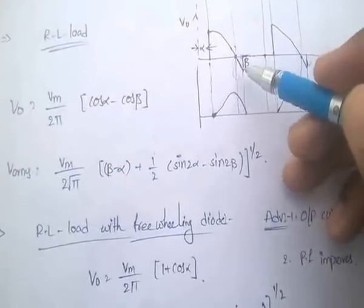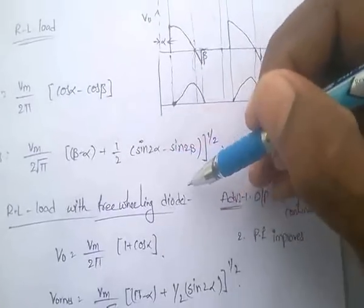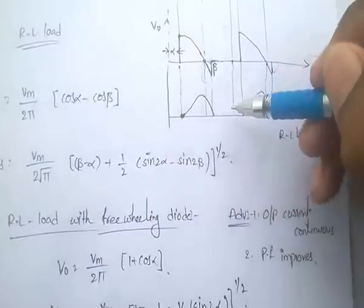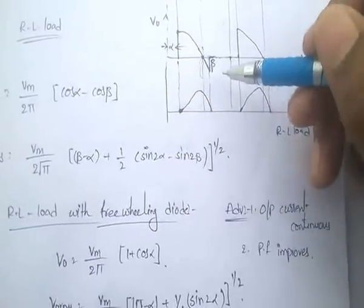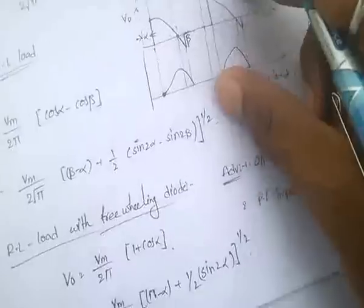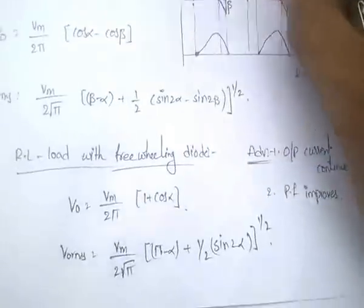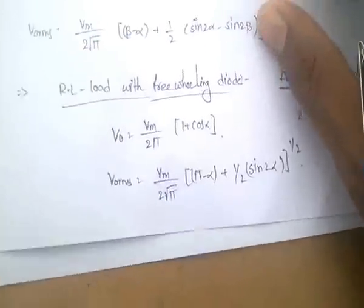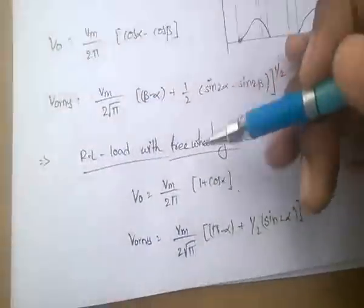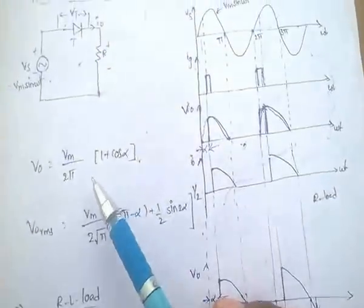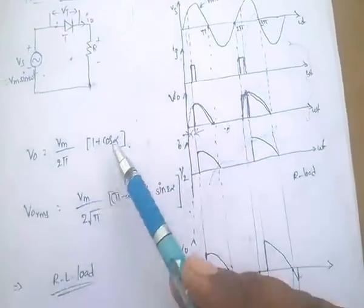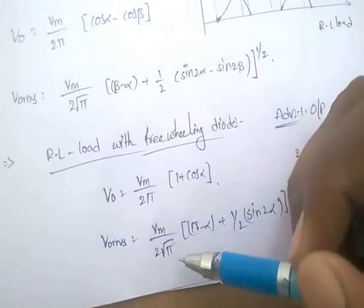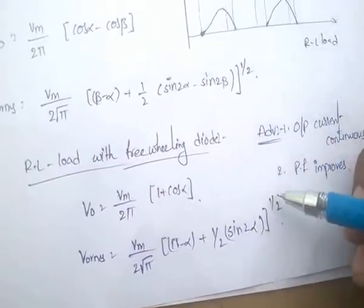Advantages of the freewheeling diode: the output current is continuous and the power factor improves. The output voltage equation for RL load with freewheeling diode is the same as half-wave rectifier with R-load: V₀ = Vm/2π × (1 + cos α), and Vrms = Vm/(2√π) × [π − α + (1/2)sin 2α]^(1/2).